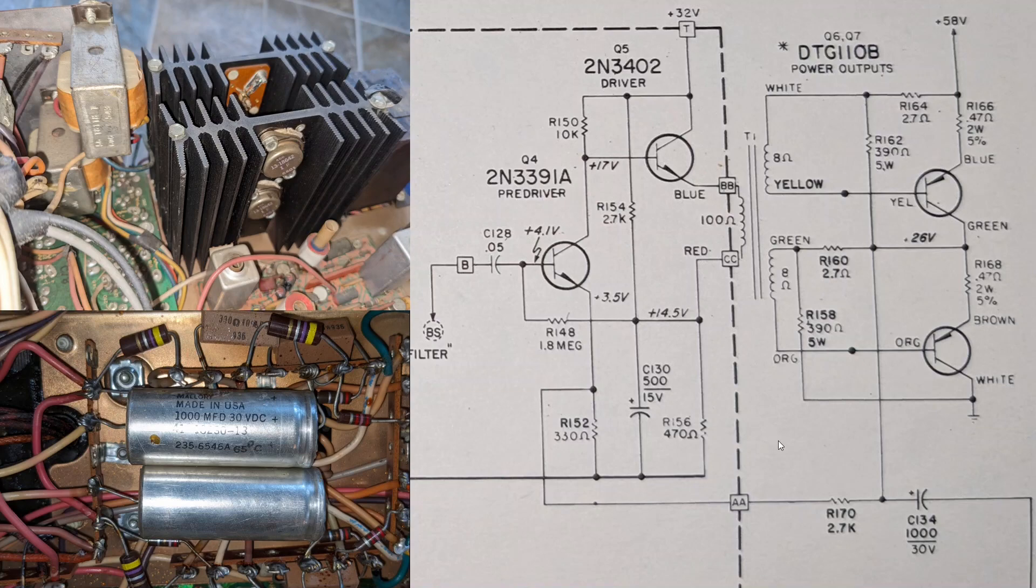At this point, I'd like to draw your attention to this biasing network, which consists of this 2.7 ohm resistor, the 390, again 2.7 and 390. Physically, those appear here. Here's your 2.7, and I think you can just make out 390 ohms here.